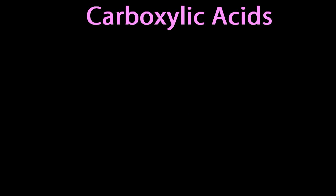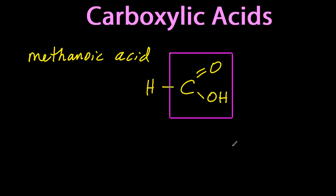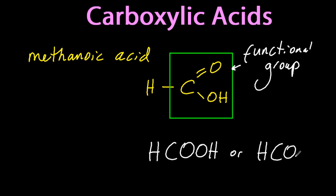Next is carboxylic acids, which are found in wasp stings. So methanoic acid, one carbon, meth. That's the one found in wasp stings. And I put a square around the functional group of the carboxylic acid. There's the condensed formula.